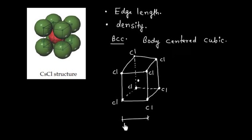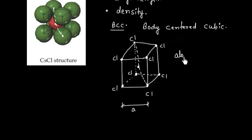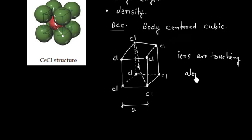This one is the edge length. If you look at the Cs atom and the chlorine atom, they are touching each other. The atoms are touching along the body diagonal — the Cs atom and the Cl atom are touching along the body diagonal.